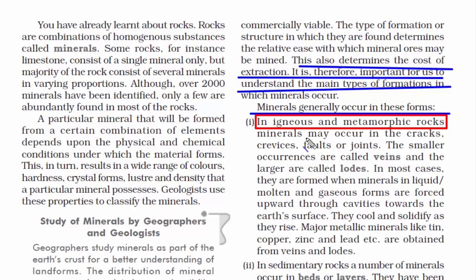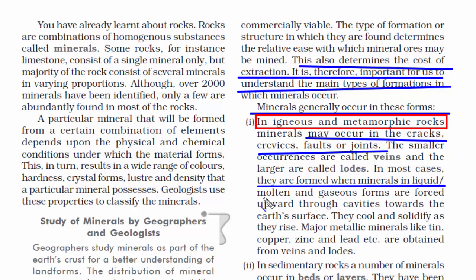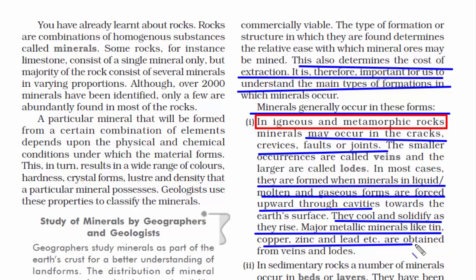Metamorphic rocks are those rocks which have been changed by extreme heat and pressure — heated, squashed, or stretched over a long period of time. This causes massive physical and chemical change. Marble is a fine example. Minerals are usually found in the cracks, gaps, or joints of these rocks. They are formed when minerals are in liquid, molten, and gaseous form — that is how they get inside the rocks. For millions of years, they cool and solidify, forming major metallic minerals like tin, copper, zinc, and lead.